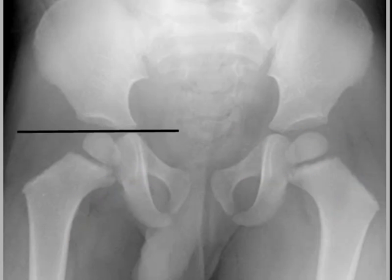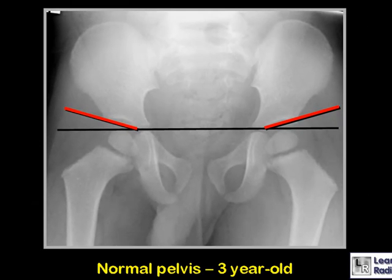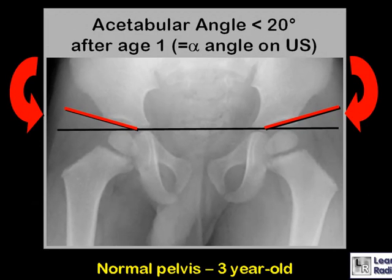Lastly, there is the acetabular angle or acetabular index, measured using the horizontal line and another line drawn from the junction of the horizontal line and the triradiate cartilage out to the outer aspect of the acetabulum. It usually measures less than 20 to 25 degrees after age one. It corresponds geometrically to the alpha angle measured on ultrasound. In patients with congenital hip dysplasia, this angle becomes enlarged, usually 30 degrees or greater.